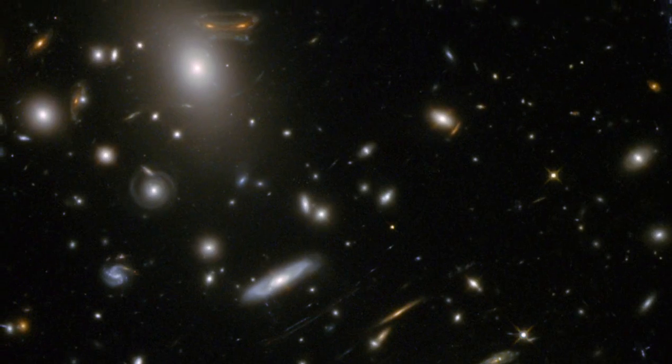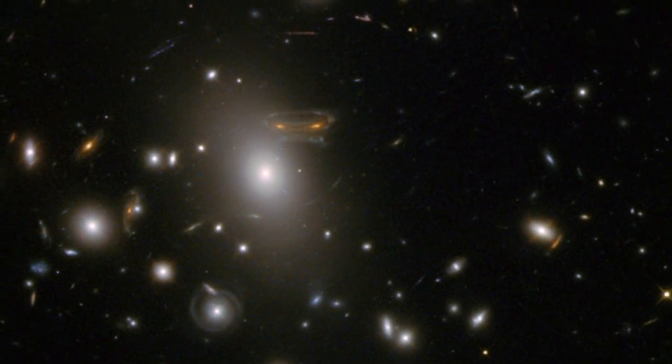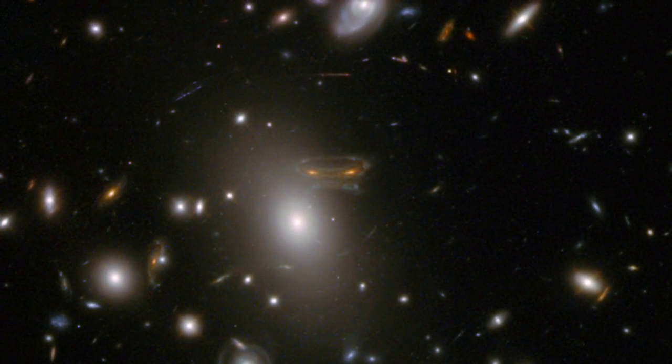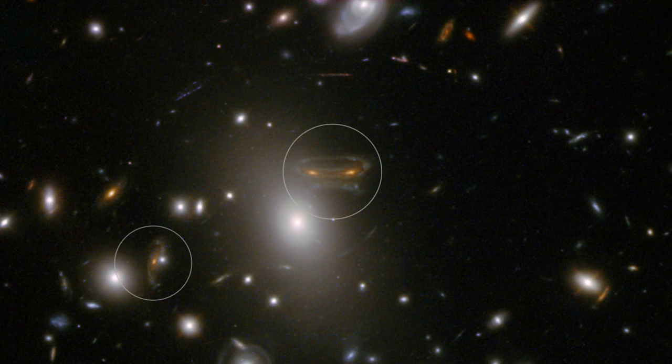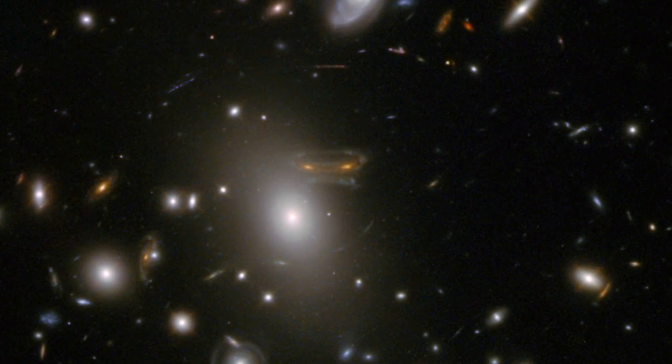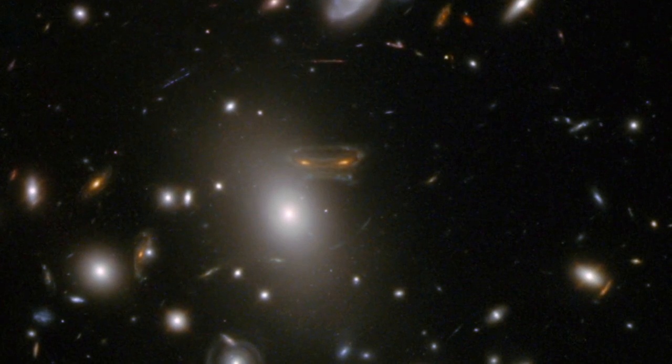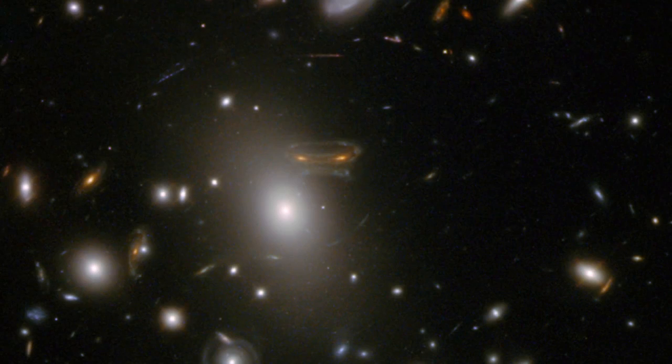But visible in the top corner is a cosmic space invader. This deformed galaxy is actually visible twice, as its light is following two separate paths around a nearer elliptical galaxy before reaching us.